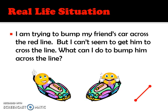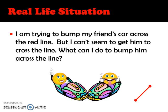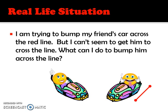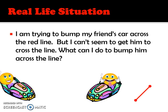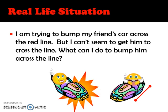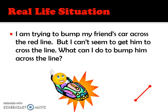I'm trying to bump my friend's car across the red line, but I can't seem to get him to cross it. What can I do to bump him across the line? I think I should create more potential energy and convert that into kinetic energy. And there he goes.